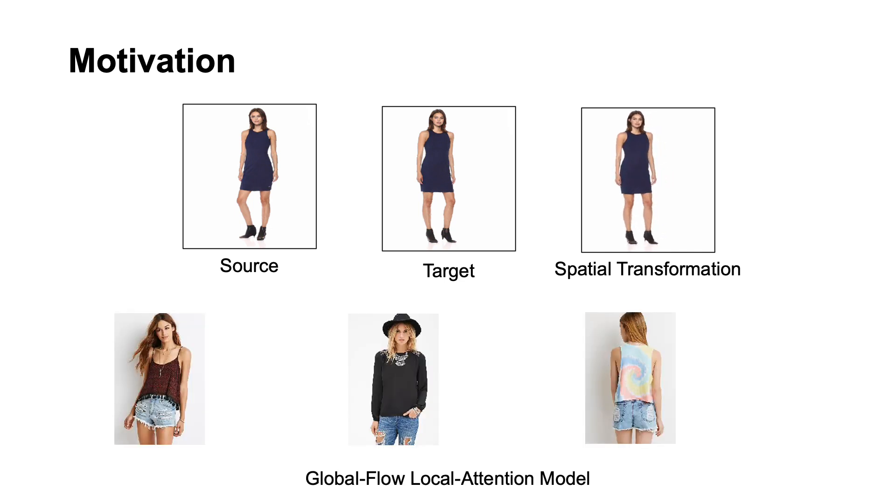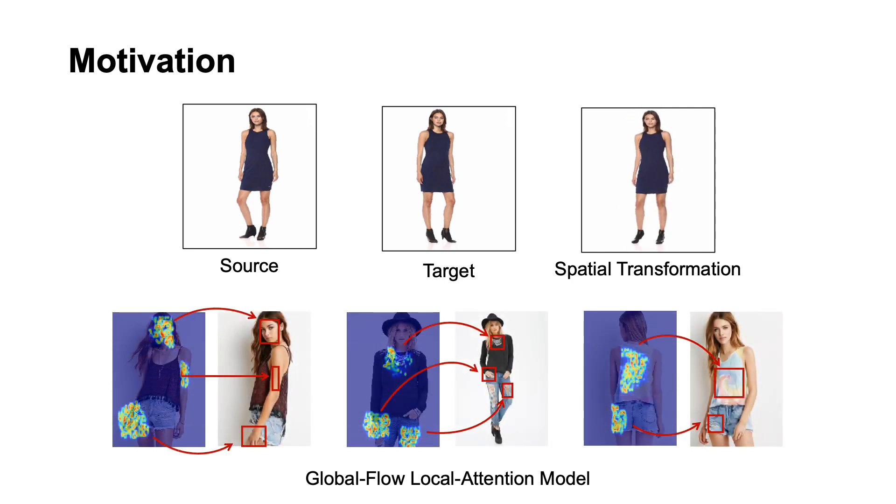Therefore, we propose a global flow local attention model for deep image spatial transformation. Our model can accurately resample source features for target image generation.